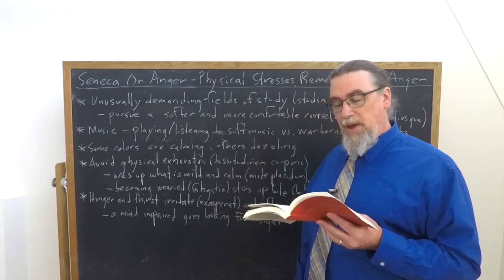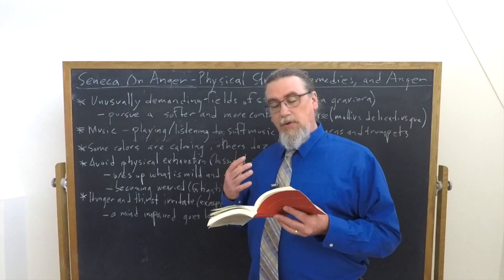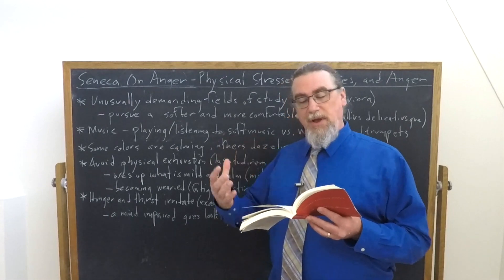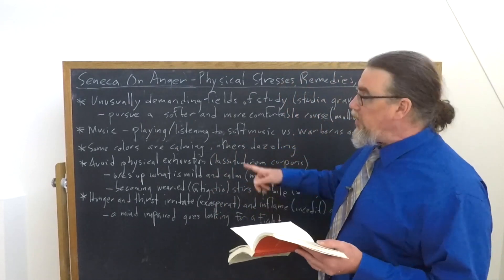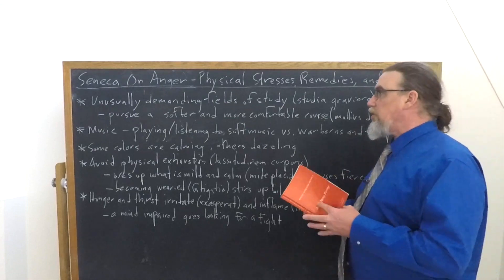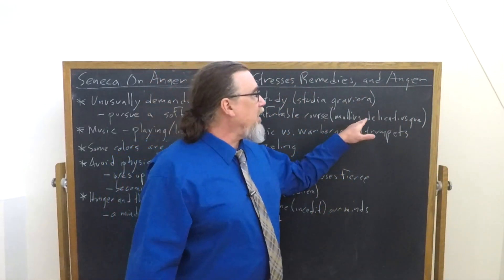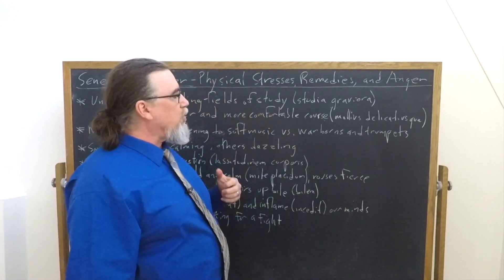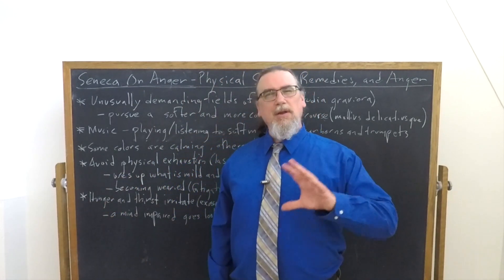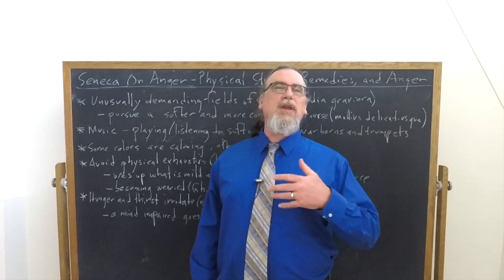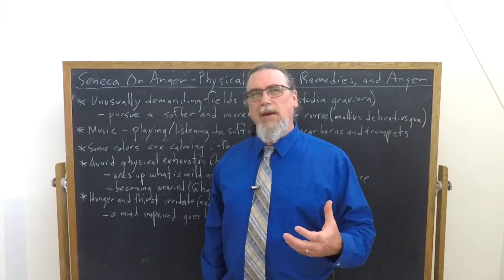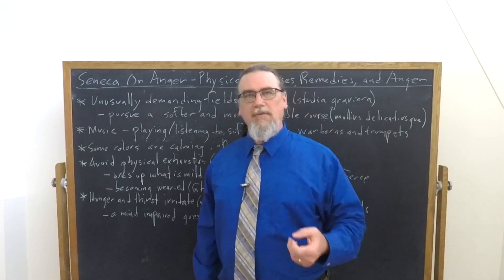What should we do instead? He says their minds shouldn't be employed on hard subjects, but should be entrusted to the pleasant arts. And he says, let them be soothed by reading poetry and beguiled by legends from history. The goal is a softer and more comfortable mental regimen, right? Mollius, which is the softer part and delicatius, more comfortable, more suited to ourselves. This isn't to say that we can't ever approach hard topics, but you get the idea with Seneca. If you're somebody who's irritable, you need to proportion it. You need to measure it. There needs to be times of relaxation as well as times of intensive study.